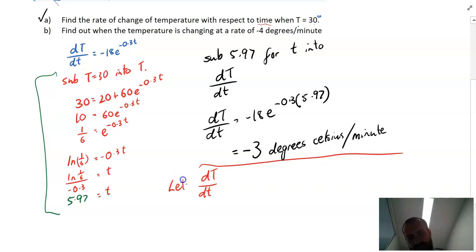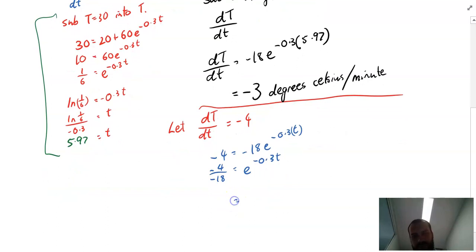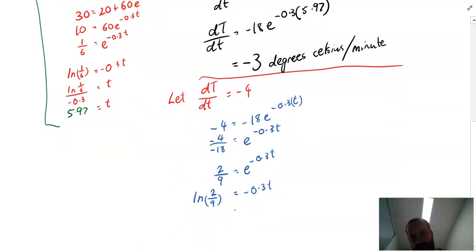So let dT/dt equal negative 4. So it's going to be negative 4 equals negative 18e to the negative 0.3t. And we're trying to find out what that t value is. Now it's just a matter of rearranging. Negative 4 divided by negative 18 is e to the negative 0.3t. That's the same as 2 over 9 equals e to the negative 0.3t. Now I'm just going to write that in log form. So ln 2/9 is negative 0.3t. And t equals ln 2/9 divided by negative 0.3. That ends up with a time of 5.01.